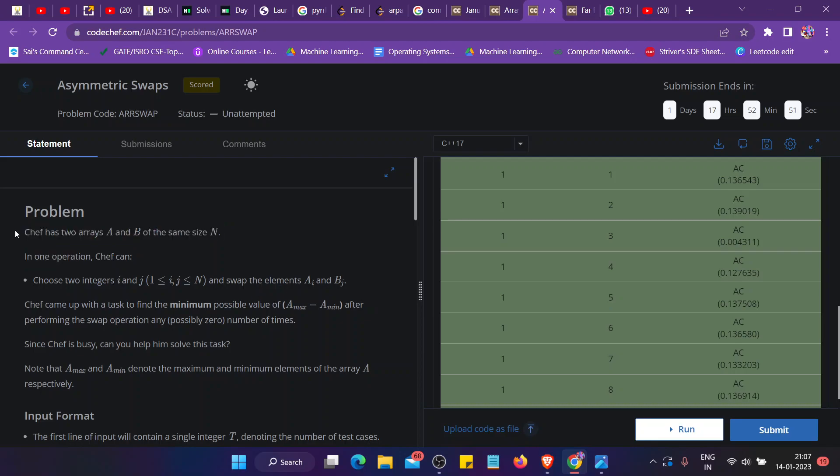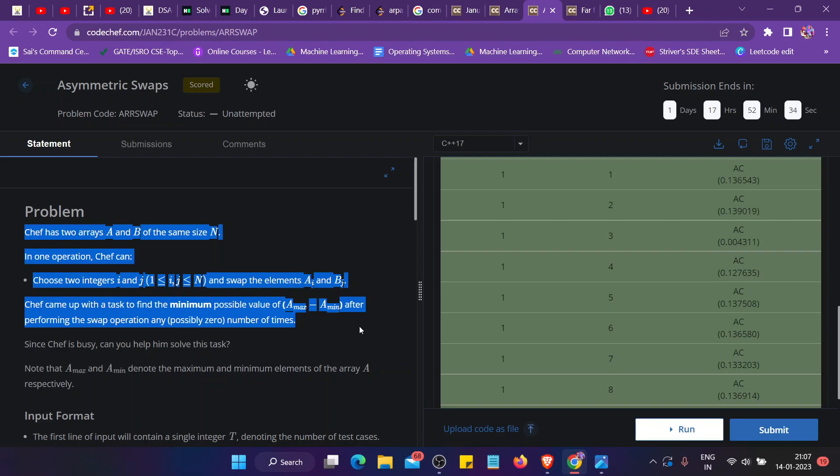The question states that Chef has two arrays A and B of size N. In one operation, Chef can choose two integers i and j and swap the elements A[i] and B[j]. The task is to find the minimum possible value of max minus min after performing the swap operation possibly zero times.